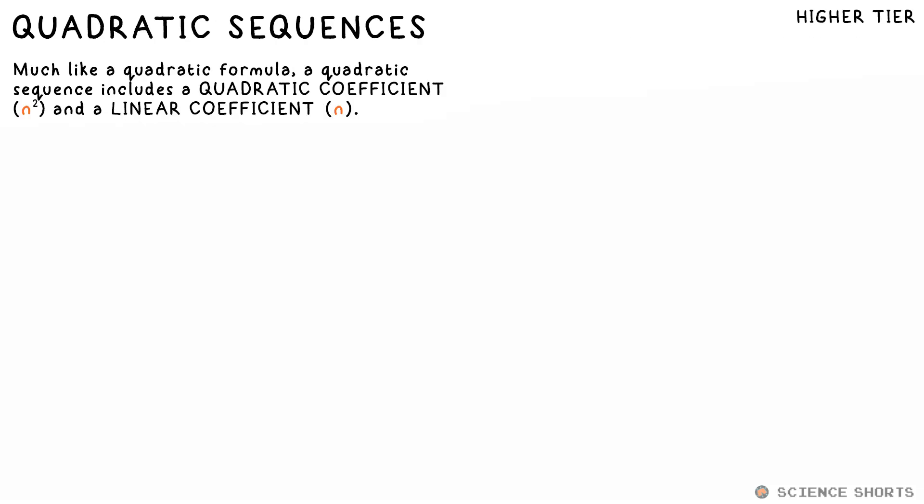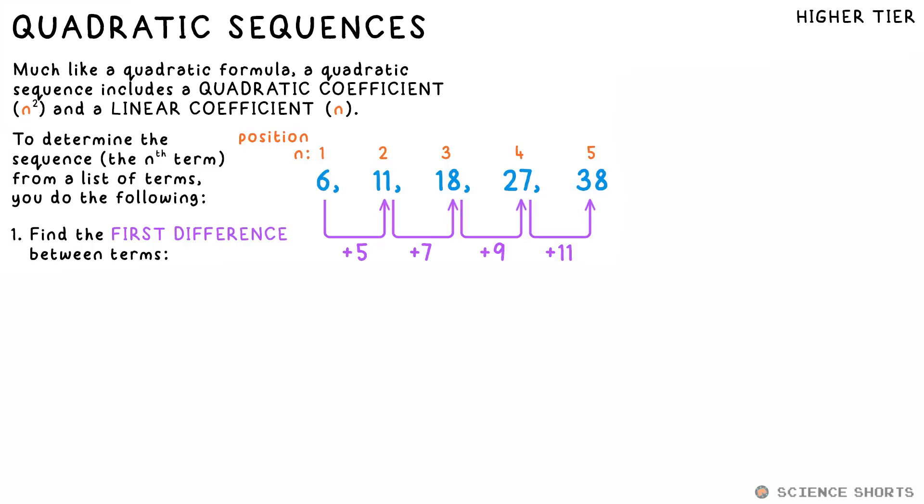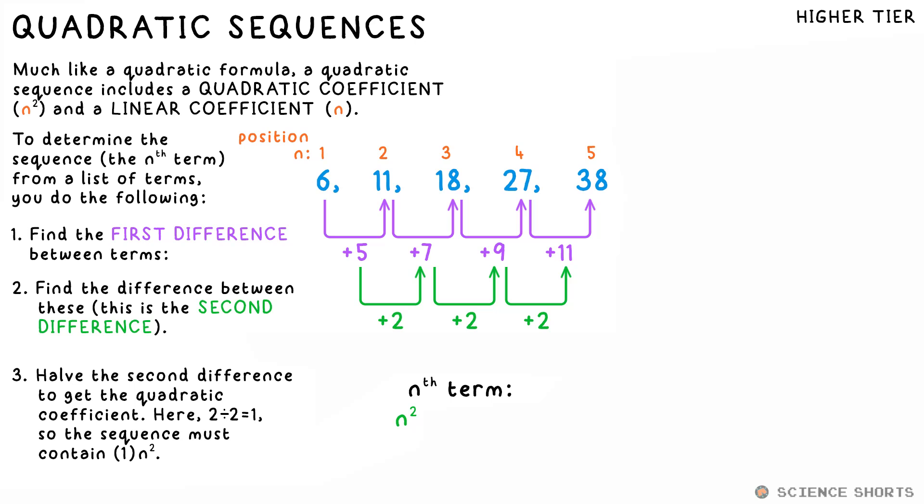You might have to deal with quadratic sequences too. Determining the nth term here is pretty tricky. First, find the difference between each term, then find the difference between those differences. This is what we call the second difference.